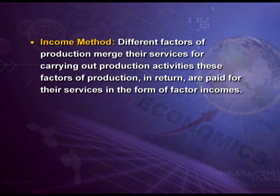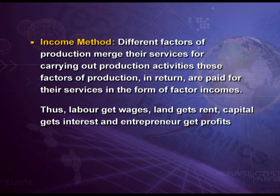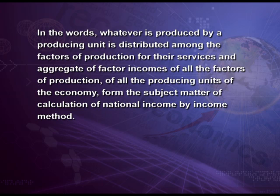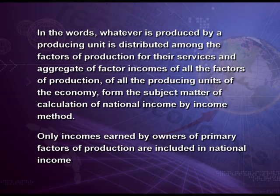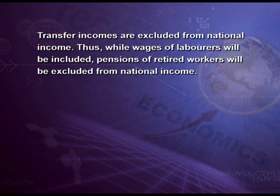Now, the income method. Different factors of production merge their services for carrying out production activities. These factors of production in return are paid for their services in the form of factor incomes. Thus, labor gets wages, land gets rent, capital gets interest, and entrepreneur gets profit. Whatever is produced by a producing unit is distributed among the factors of production for their services, and the aggregate of factor incomes of all factors of production of all producing units of the economy forms the subject matter of national income calculation. Only incomes earned by owners of primary factors of production are included. Remember, transfer incomes are excluded — so while wages of laborers will be included, pensions of retired workers will be excluded from national income.